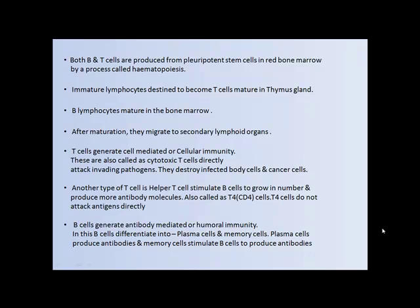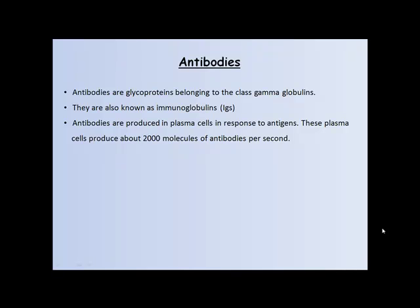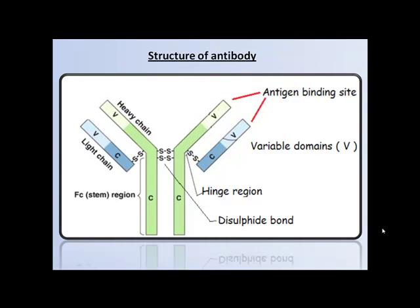Antibodies are glycoproteins belonging to the class gamma globulins, also called immunoglobulins. Antibodies are produced in plasma cells in response to antigens. These plasma cells produce 2000 molecules of antibodies per second. The structure of an antibody is Y-shaped. It contains four polypeptide chains: two heavy chains (H-chains) and two light chains (L-chains), held together by disulfide bonds to form the Y-shaped structure.